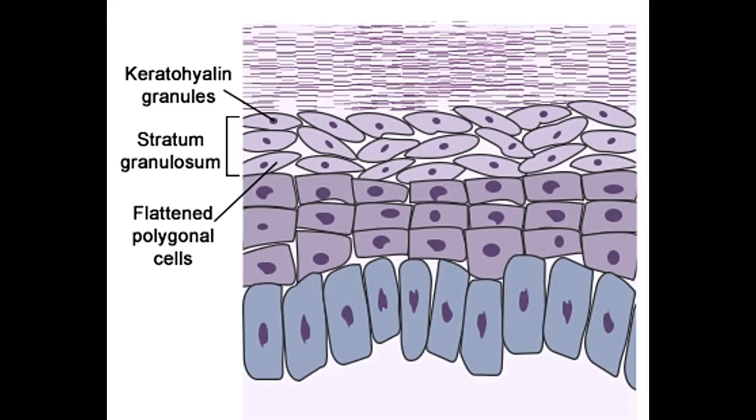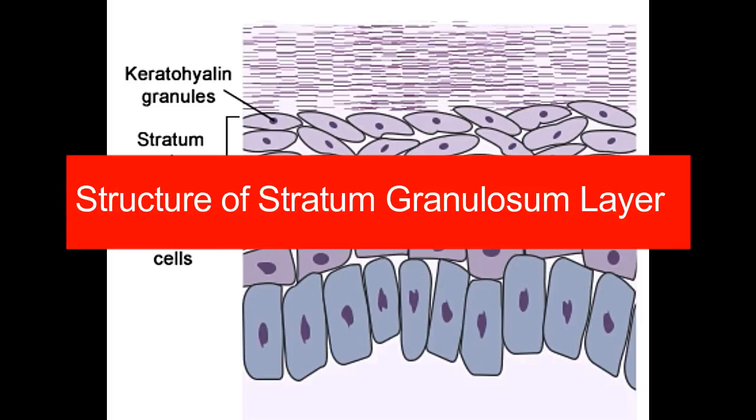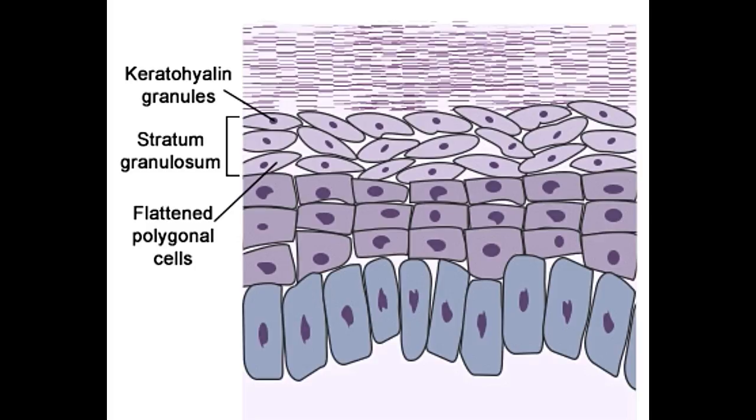The stratum granulosium layer is three to five cell layers thick and essentially made up of flattened polygonal or rectangular-shaped cells. It is a thin layer of epidermis and considered a transitional layer sandwiched between the metabolically active layers beneath and the non-viable layer containing dead cells above.